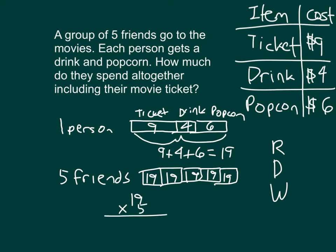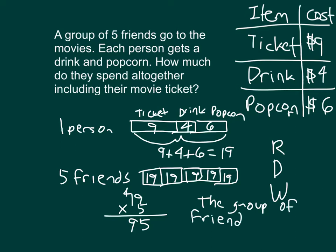19 times 5 — let's use a standard algorithm. 5 times 9 is 45. Place the 5, regroup 4. 5 times 1 is 5, plus 4 is 9. So we have 95. And let's make sure to write out a nice sentence for that. The group of friends spends $95 all together.